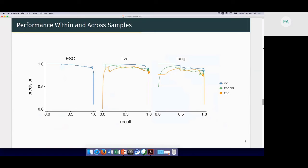How well does this work? We first apply this to three different cell types: mouse embryonic stem cells, liver, and lung. We do this within a cell type, these are the blue lines where we do cross-validation, but we also try to train a model on embryonic stem cells and apply it to liver and lung. These are the green and orange curves, which are with or without normalization, and you can see that this basically works within and across samples pretty well.